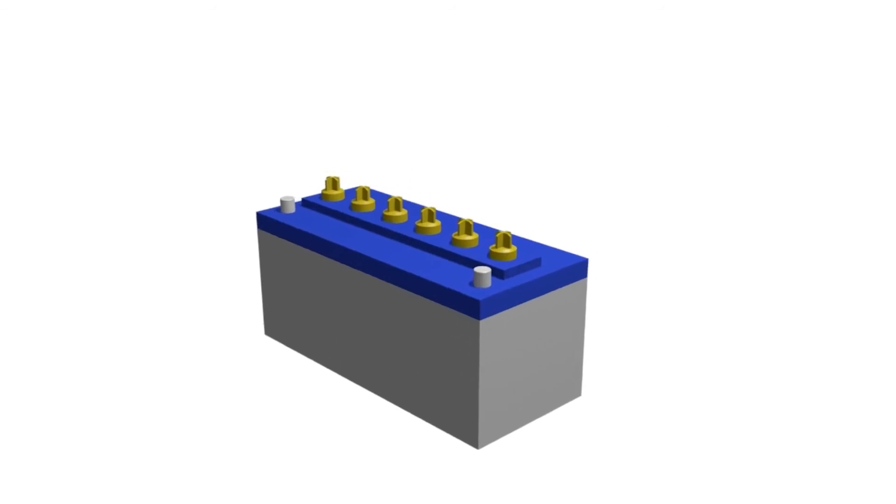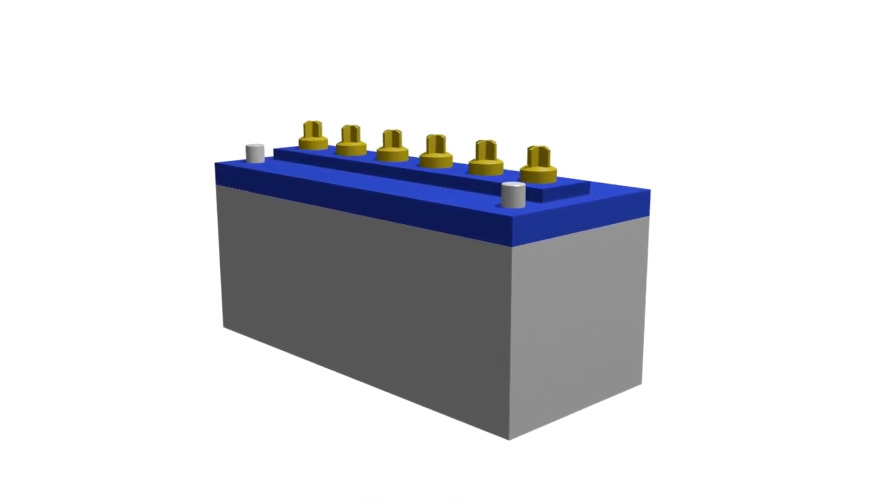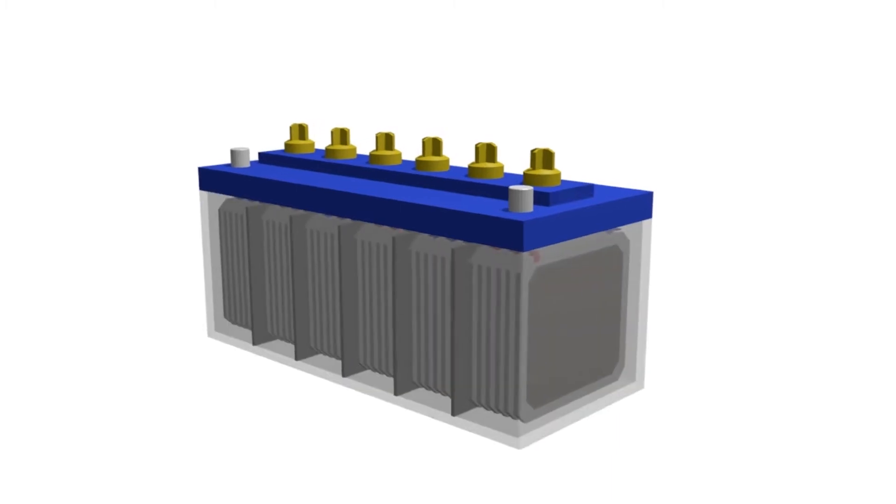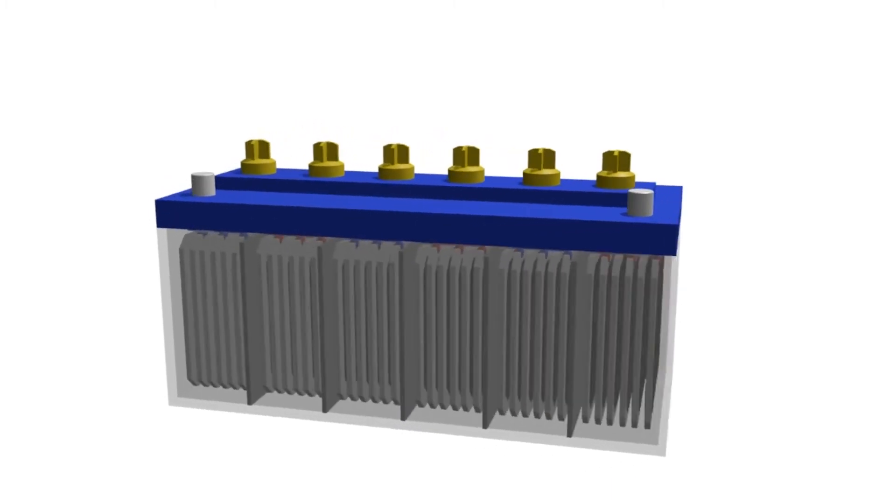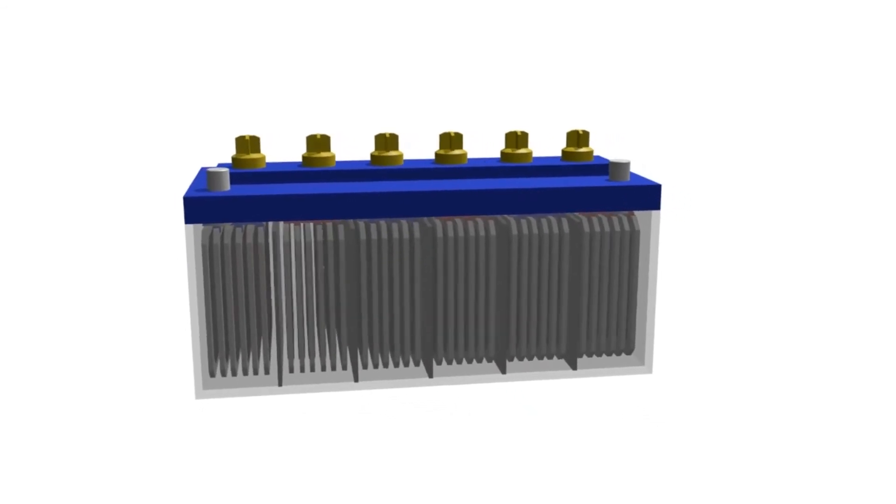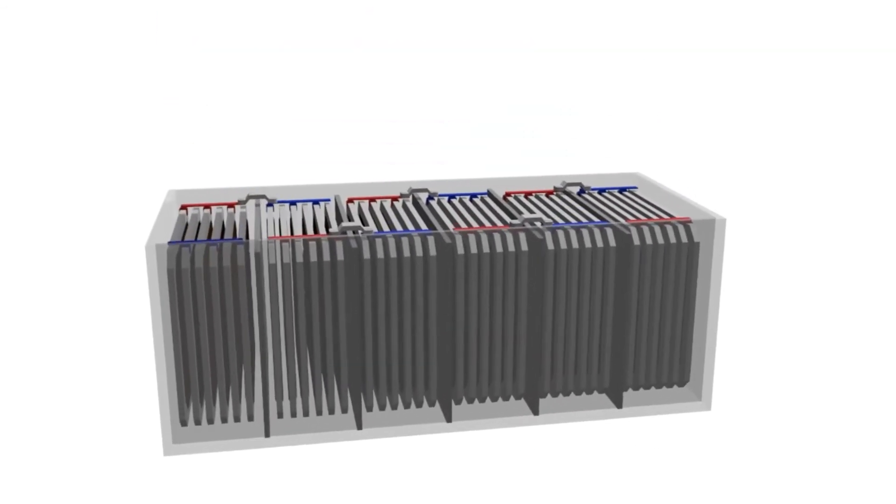Now take a look at the construction of a vehicle battery. Vehicle batteries generally have 12 volts of voltage. If we look inside, there are six cells connected in series. That means one cell has a voltage of 2 volts.